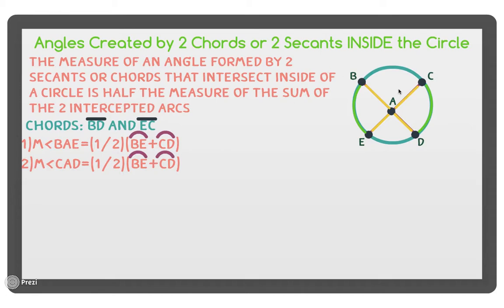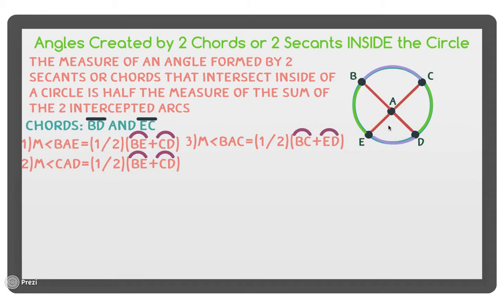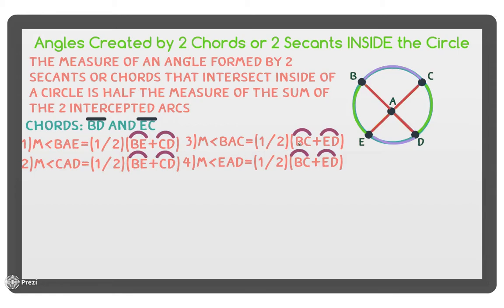The same is true for angles facing up or down. For this angle, the two intercepted arcs are the arcs above and below it — those are the two purple arcs. The same applies for the angle below it: angle EAD also uses the two purple arcs above and below. So if an angle faces up or down, the intercepted arcs are above and below; if it faces left or right, the intercepted arcs are to the left or right. The angle equals one half of the sum of the two intercepted arcs.